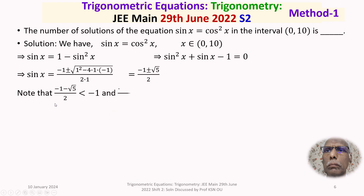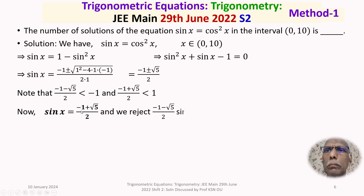Notice that (−1 − √5)/2 is less than −1, while (−1 + √5)/2 is less than 1. Since sin x must satisfy −1 ≤ sin x ≤ 1, we reject (−1 − √5)/2. Therefore, sin x takes the value (−1 + √5)/2.